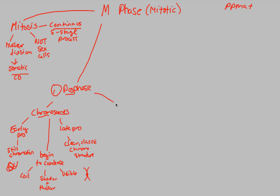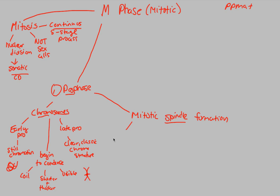Also during prophase, we have mitotic spindle formation. We talked about centrosomes and centrioles duplicating in G2 — now we have further formation of the mitotic spindle. These spindle fibers will attach to the kinetochore and pull sister chromatids apart. We're creating these spindles specifically because they are responsible for separating the chromosomes during anaphase.